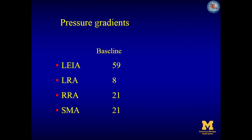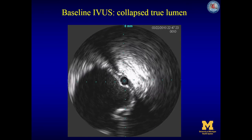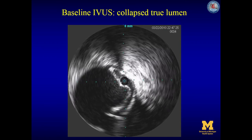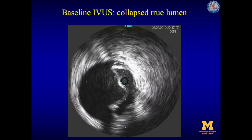These are the baseline pressure gradients of the different visceral branch vessels: the left external iliac artery, the left and right renal arteries, and the superior mesenteric artery. Those gradients are measured with one catheter in the aortic root in the ascending aorta and the other catheter in the trunk of the particular visceral vessel. This is now a focused IVUS better oriented on the visceral segment.